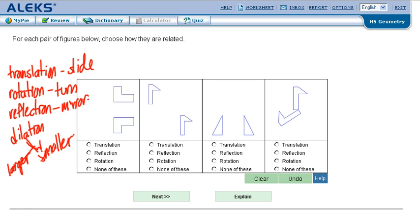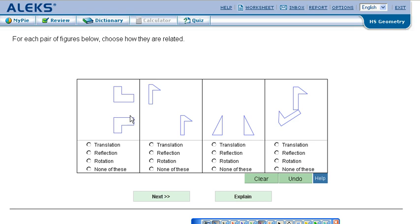So we're taking a look here and asking ourselves, which one do we have down here? And in this first one, we have flipped over a line, so it's reflection.